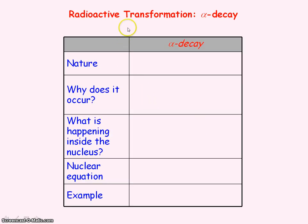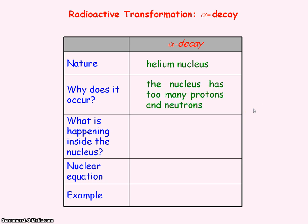An alpha particle is a helium nucleus — it's made up of two protons and two neutrons. It is not a helium atom because the atom would also have two electrons. Alpha decay occurs when the nucleus is too heavy; it has too many protons and neutrons to be stable, so during alpha decay the nucleus loses two protons and two neutrons.